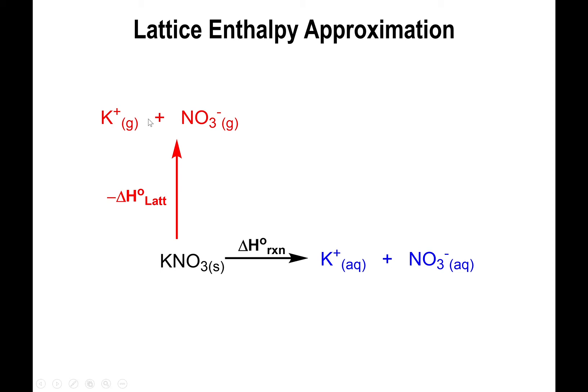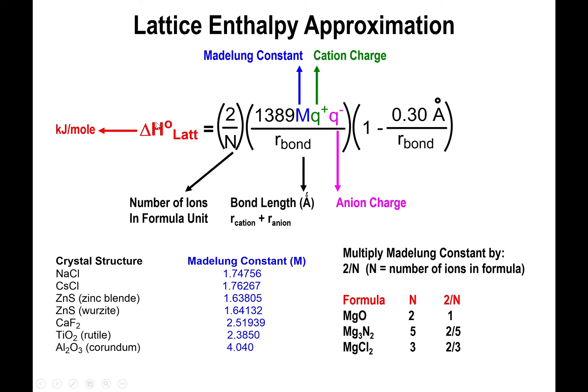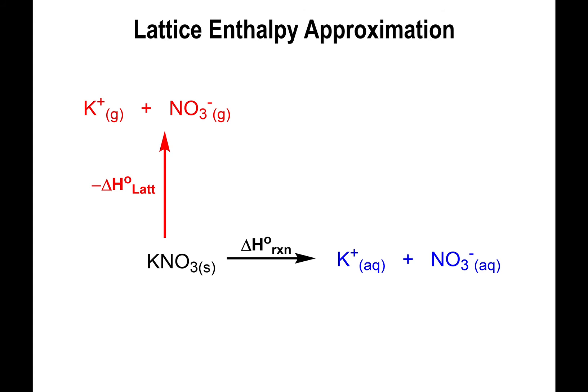Then we hydrate each ion individually. Starting with potassium plus gas — if you add water to make it aqueous, you get the hydration enthalpy. The lattice enthalpy can be approximated using the Kapustinskii equation from the previous lecture, giving us a direct means of calculating it. The potassium plus gas is hydrated to form potassium plus aqueous, and the process of going from gas to aqueous is called the enthalpy of hydration of the cation.